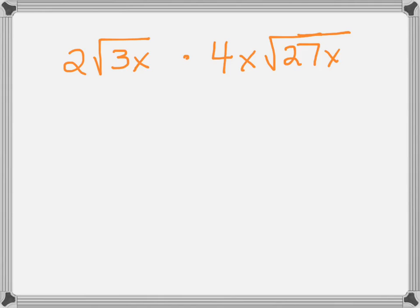So here's a second example. We're going to multiply the terms outside the radicals, 2 times 4x, which is going to give us 8x.